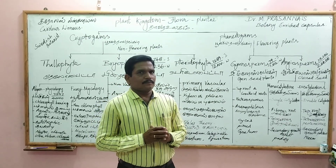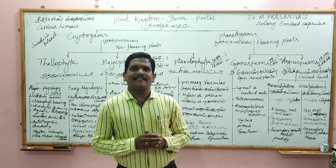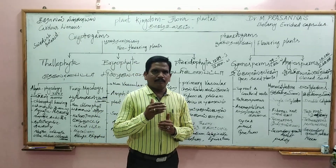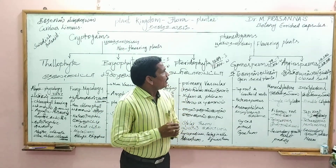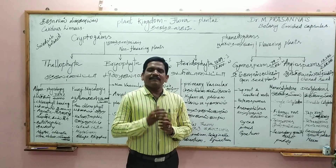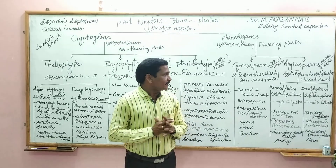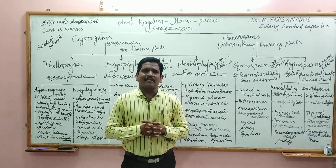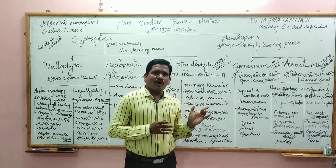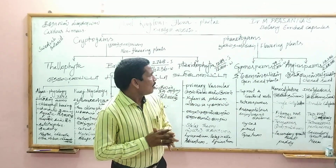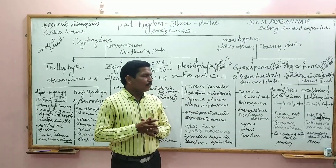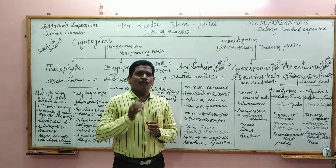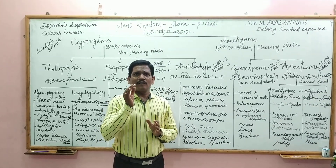The Angiosperms are the most highly evolved plant group. These are closed-seeded plants, divided into monocotyledons and dicotyledons.